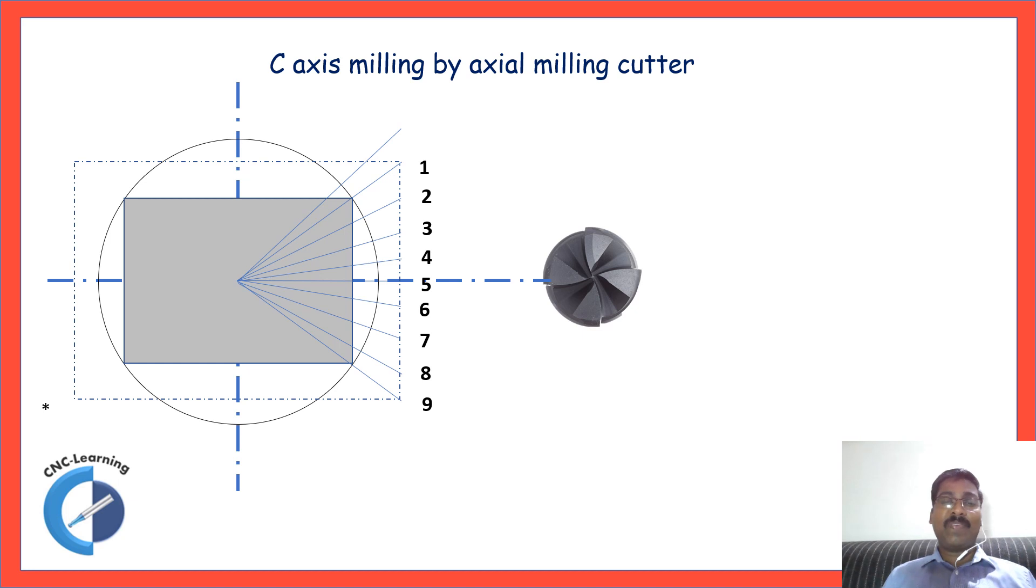Now you can see this figure to make a rectangular block on a turn mill center with C axis. So the coordinates are marked. There are different ways of programming this.